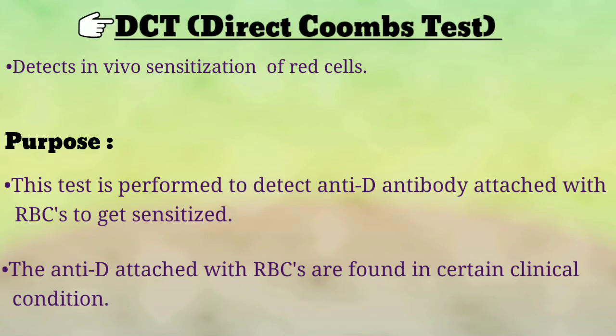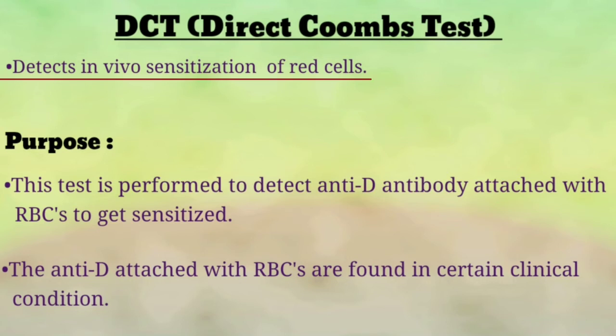Direct Coombs test is used to detect in vivo sensitization of red cells. In vivo sensitization of red cells means those RBCs which are already sensitized inside the body — those on whose surface IgG molecules are already attached. This is the condition we are talking about where IgG antibodies attach to the surface of RBCs.